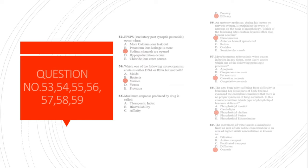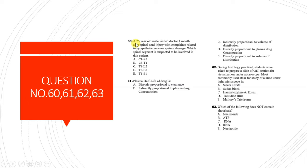Question 60: A 25-year-old man visited one month after spinal cord injury with complaints related to sympathetic nervous system damage. Which spinal segment is suspected? The sympathetic nervous system is formed by preganglionic and postganglionic fibers from the T1 to L2 spinal segments, also called the thoracolumbar system.